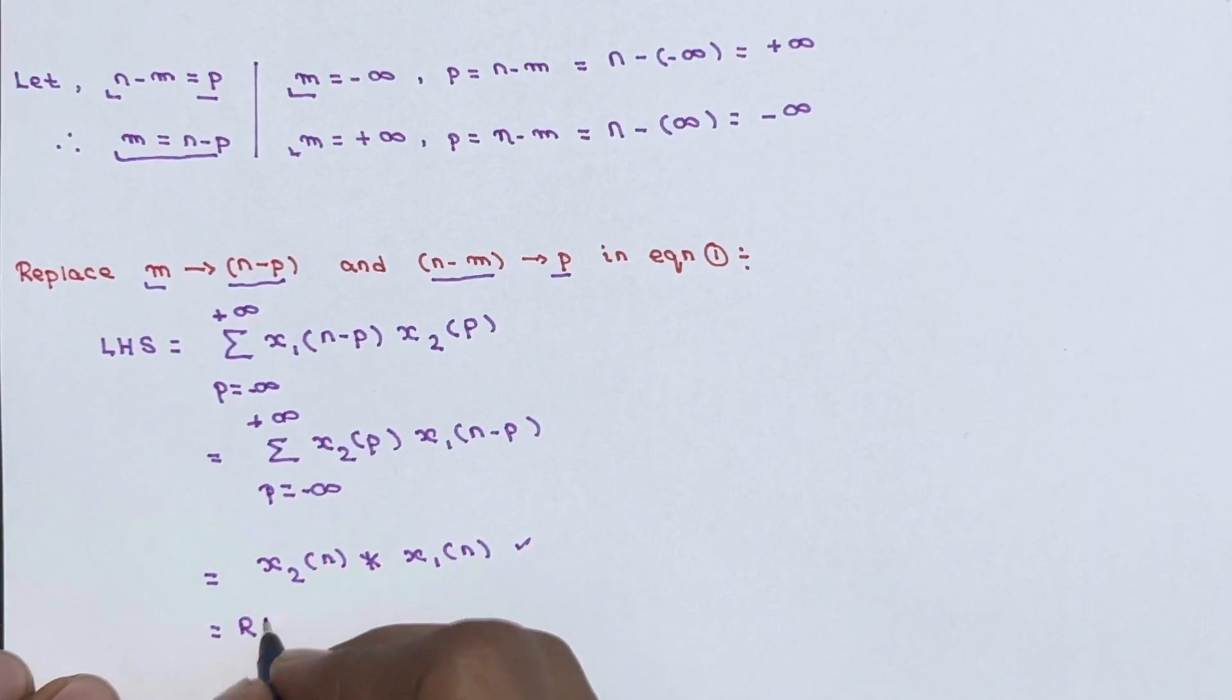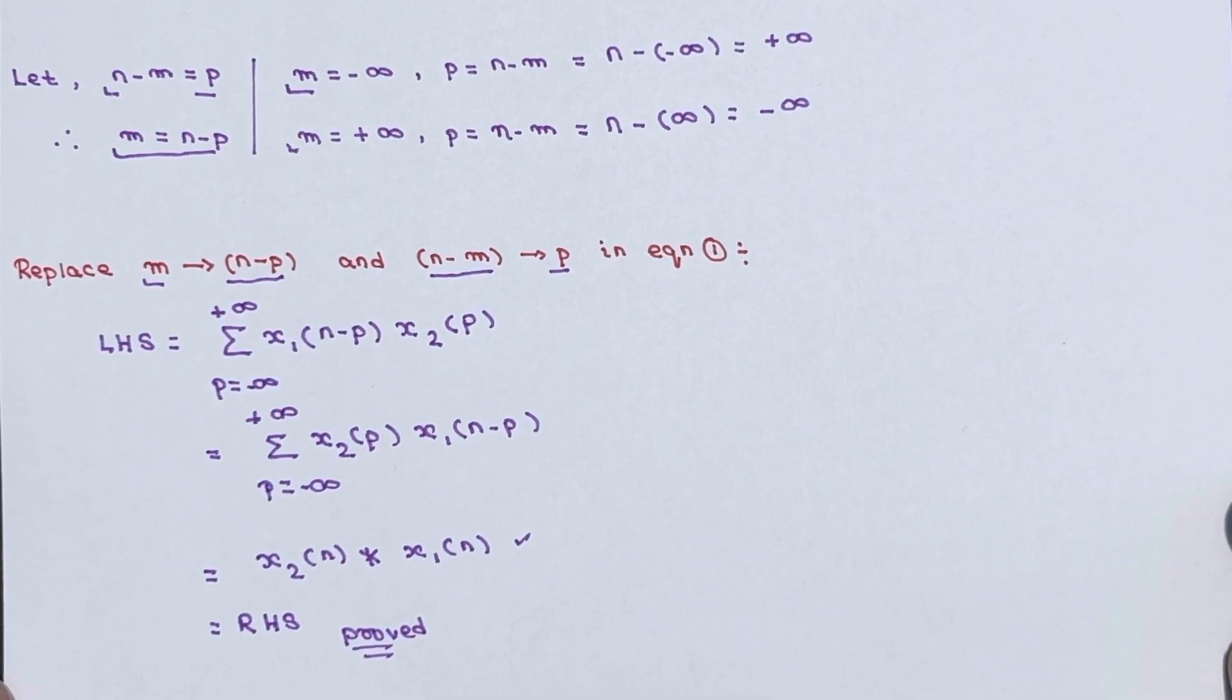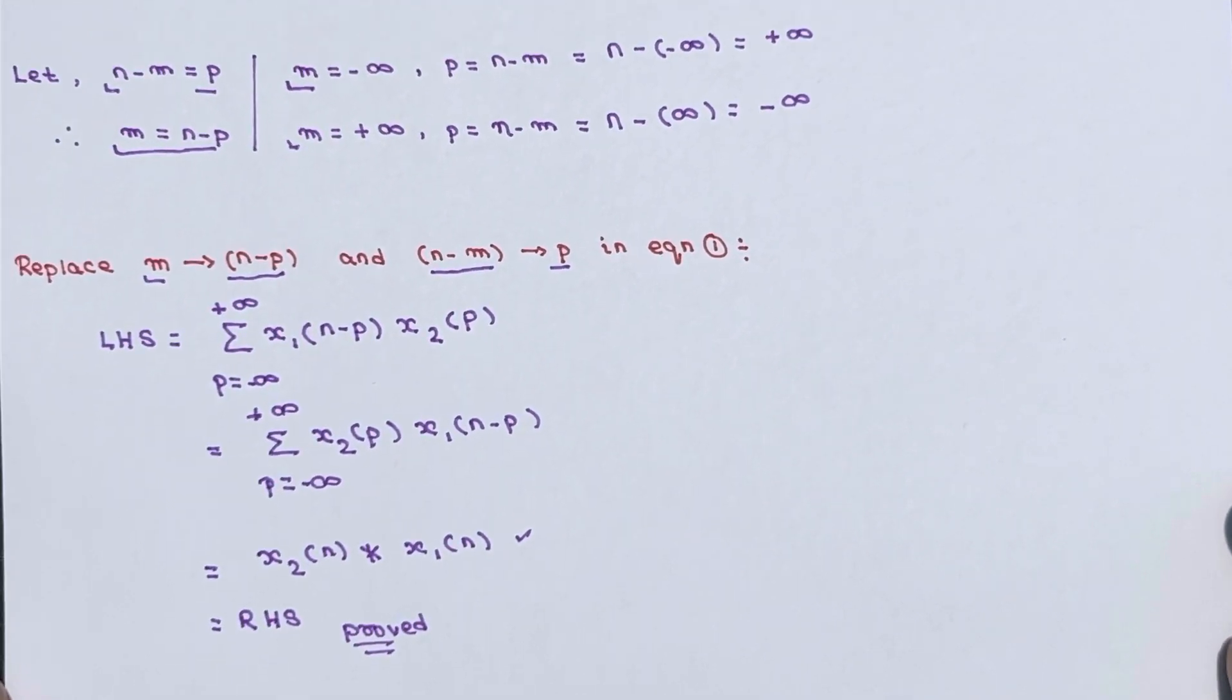So we started from LHS and we got RHS. So this property got proved here. I hope it is clear to you. If you have any doubt in this particular proof, you can ask in the comment section. Thanks for watching.